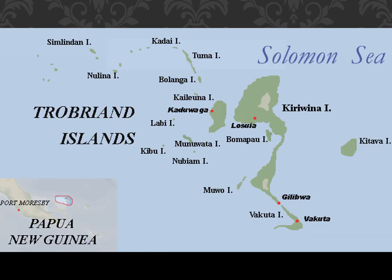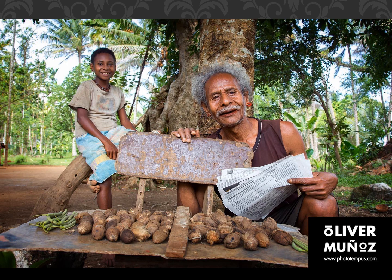The Trobriand Islands are located east of Papua New Guinea in the South Pacific, closer to what we call the Solomon Sea. There is a wide variety among the Trobriand Islanders today — some have adopted modernity with Western clothing and economic practices, such as one gentleman selling fruits to tourists. But others still live a more traditional way of life.